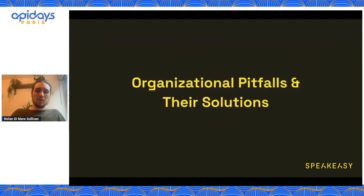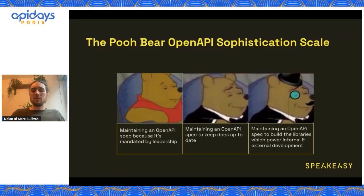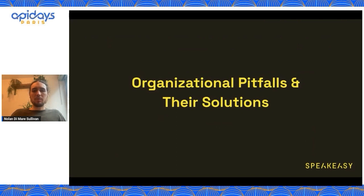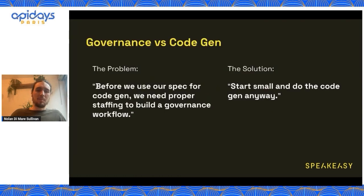So how come people aren't all using their spec for CodeGen, if we can agree that this is desirable and it's going to be better for your business? Well, there's a common set of problems that I'm going to be walking through — things that have prevented people from being able to achieve that higher plane of developer experience for their API. The first category is organizational pitfalls, and I'm going to talk through how you can short-circuit some of those. The most common one goes something like this: we can't use our spec for CodeGen because we don't have the right level of staffing and we haven't built a sophisticated enough governance workflow.